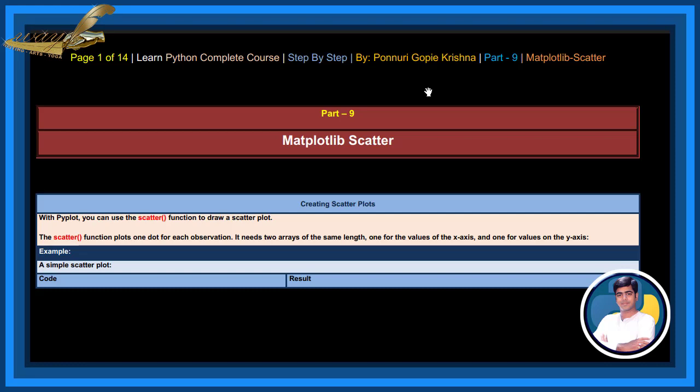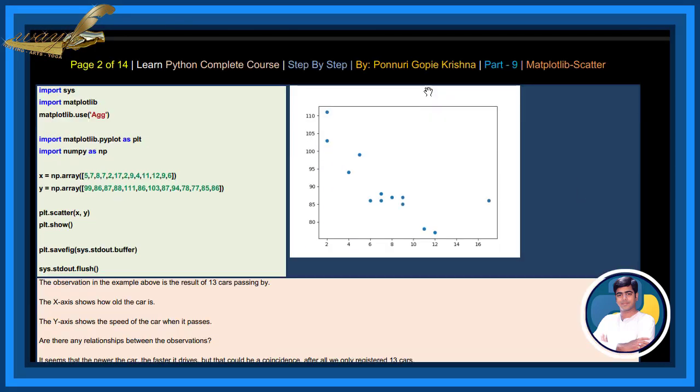See the example, a simple scatter plot. This is a simple scatter plot. See here, x and y-axis. The observation in the example above is the result of 13 cars passing by. The x-axis shows how old the car is. The y-axis shows the speed of the car when it passes.